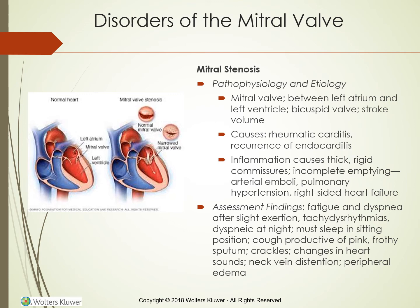Pulmonary hypertension increases the work of the right ventricle as it pumps against high pressure in the pulmonary vascular system. Because blood flows in a circuit, disease on the left side of the heart eventually affects the right side. The right ventricle may enlarge in response to increased workload. When right ventricular contraction can no longer overcome pulmonary resistance, right-sided heart failure develops. Excess blood accumulates in the venous circulation, the liver becomes congested, and edema occurs in the legs.